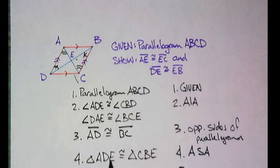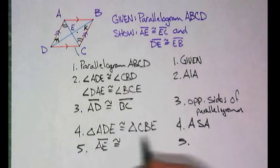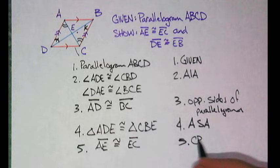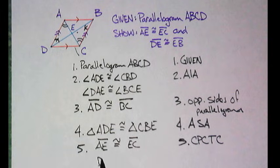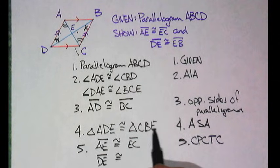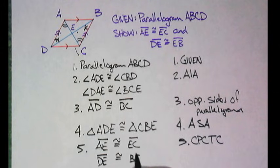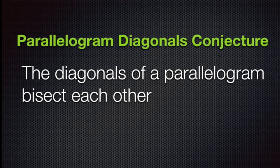And then we look back at what we wanted to show. AE is in this triangle, is congruent to EC in this triangle. Corresponding parts of congruent triangles are congruent. Fantastic. Now, is DE also in this triangle? As a matter of fact, it is. It also must be congruent to BE. Same corresponding parts of congruent triangles. So what did we prove in this? Well, we proved if you took the diagonals and cut them apart, the parts are congruent. Or, in other words, the diagonals of a parallelogram will bisect each other.